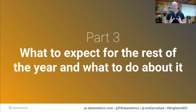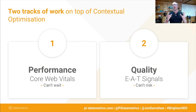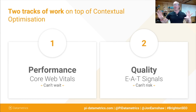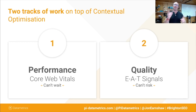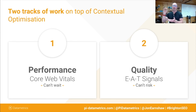We've got core web vitals which can't wait, and we've got those EAT signals which you cannot risk — even if you did well in the previous June core update, that doesn't mean you won't be negatively impacted in the next one. We need to start ticking all the boxes. For core web vitals — track one — it dropped June 15th and has several weeks left to play out. The key difference between a broad core impact and a core web vitals impact is that it is significantly easier and Google is significantly more responsive to the changes you make from a page performance perspective.